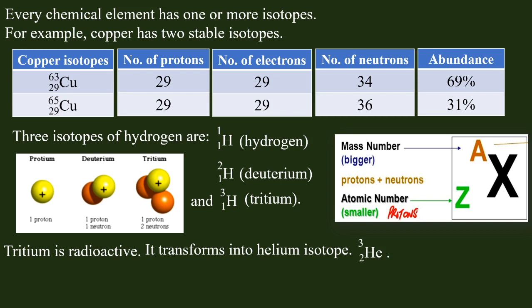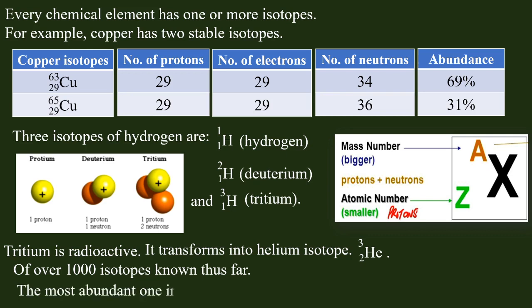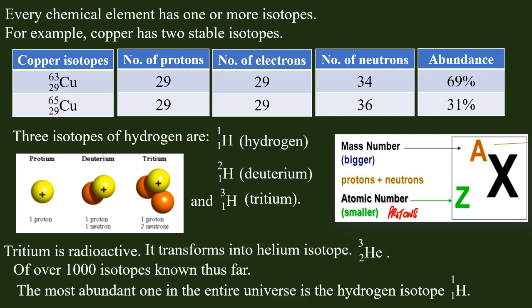It transforms into helium. Of over 1,000 isotopes known thus far, the most abundant in the entire universe is hydrogen isotope 1H1.